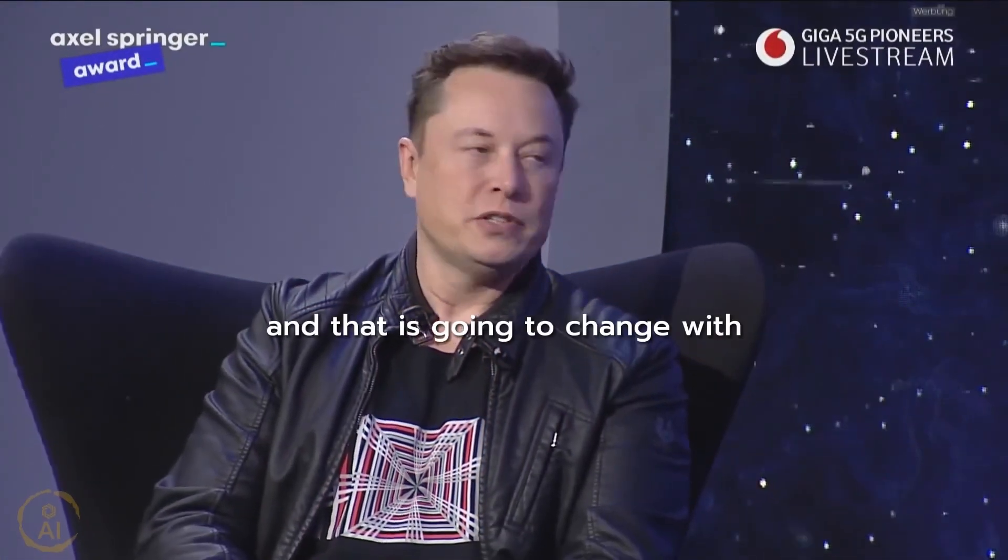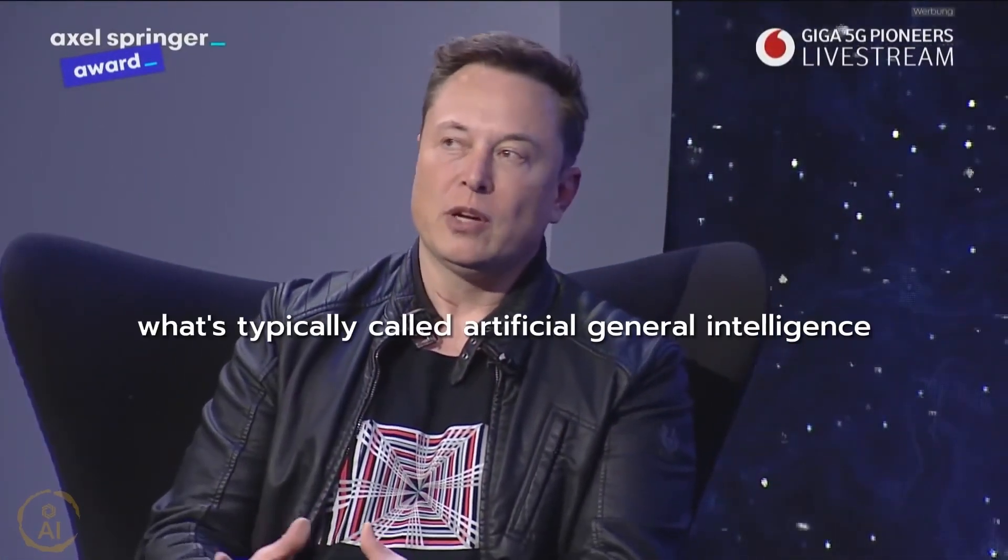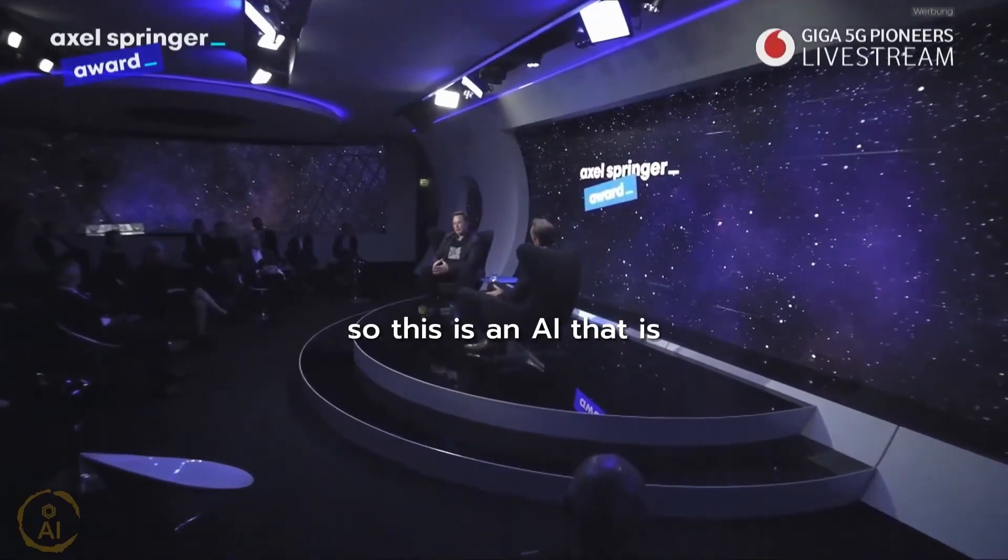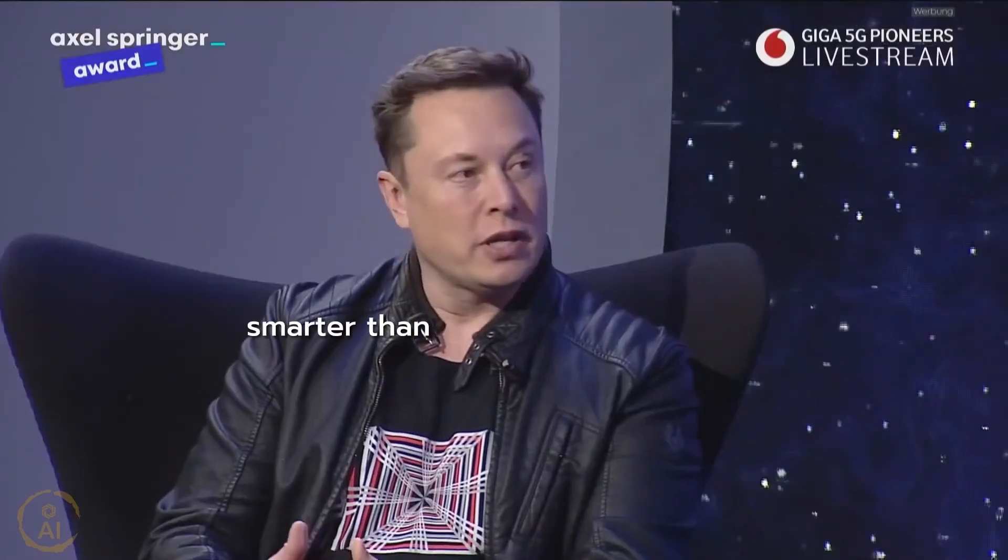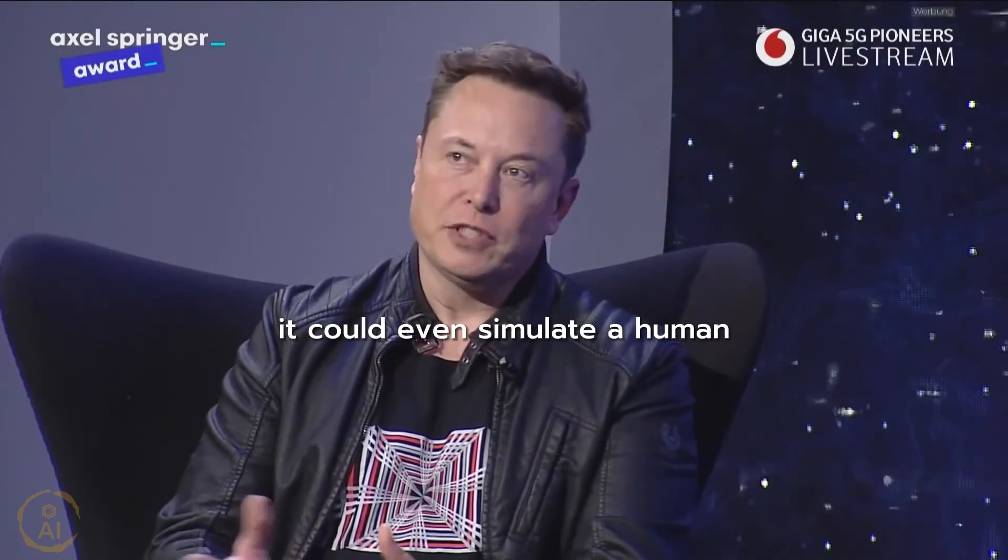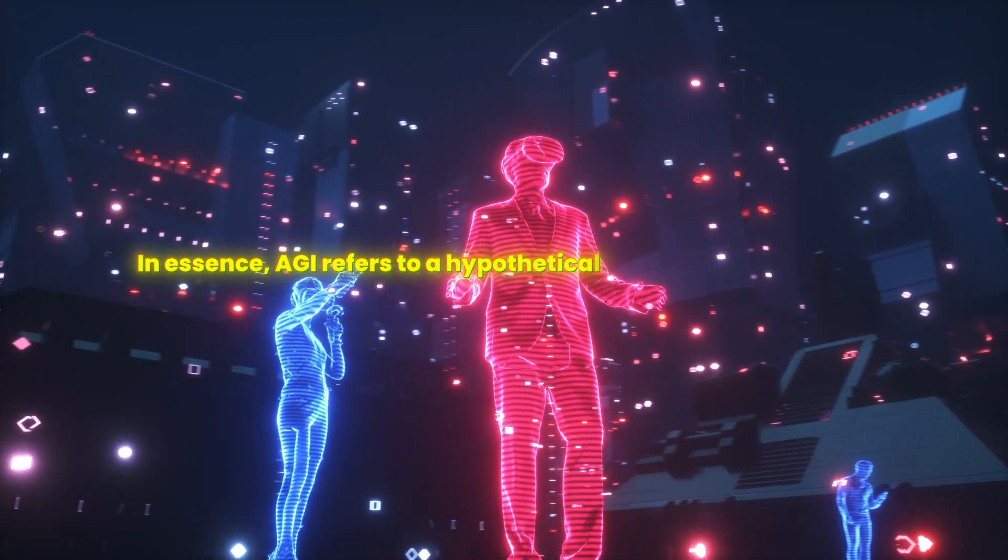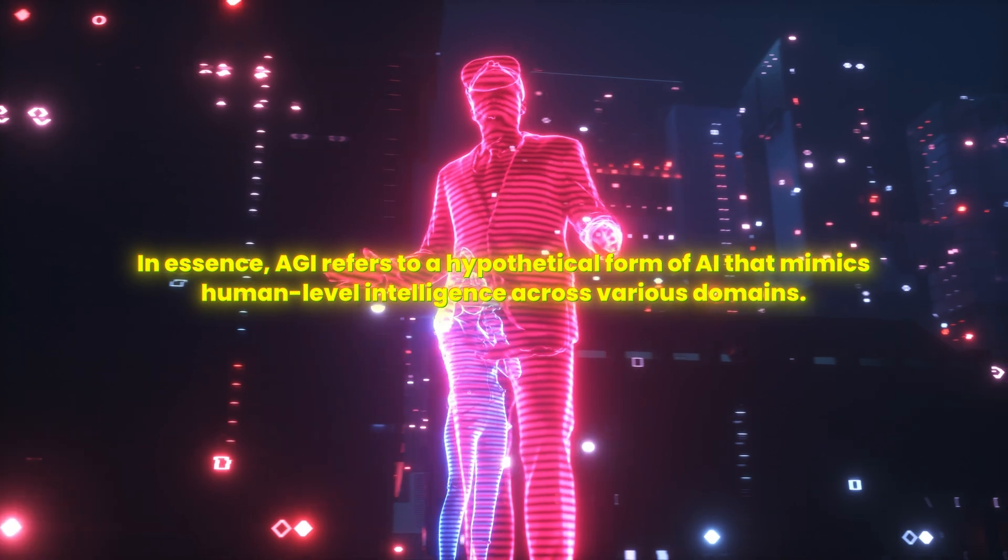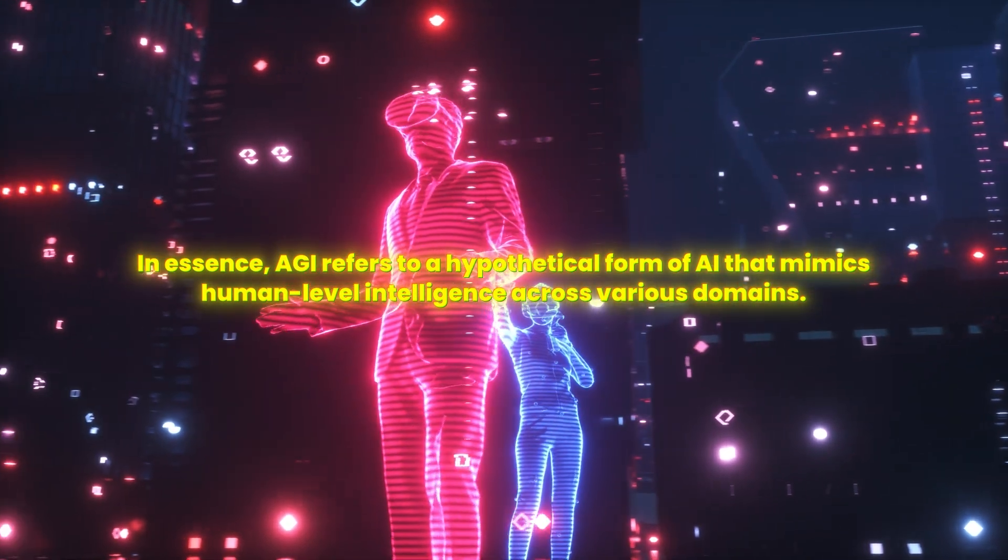And that is going to change with what's typically called artificial general intelligence. So this is, say, an AI that is smarter than a human in every way. It could even simulate a human. In essence, AGI refers to a hypothetical form of AI that mimics human-level intelligence across various domains.